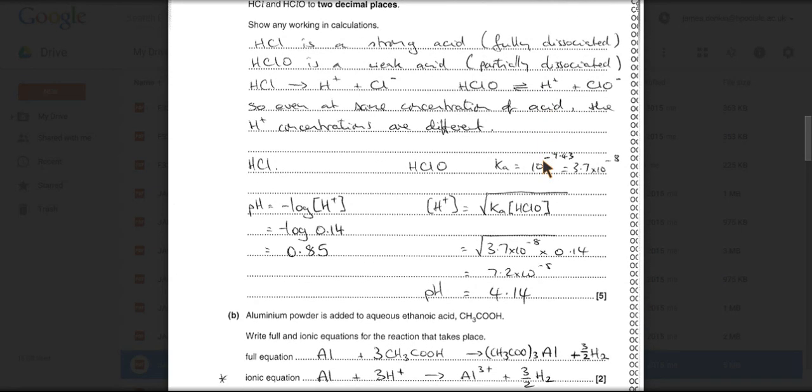And there's the calculations. So the HCl one is straightforward, strong acid, pH. So that's just minus log of the H plus concentration. So minus log 0.14, and at two decimal places we get 0.85.